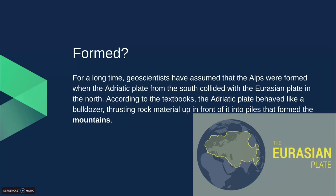So for a long time, geoscientists have assumed that the Alps were formed when the Adriatic plate from the south collided with the Eurasian plate in the north. According to the textbooks, the Adriatic plate behaved like a bulldozer, thrusting rock material up in the front into piles that form mountains.